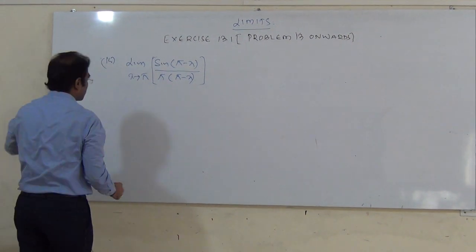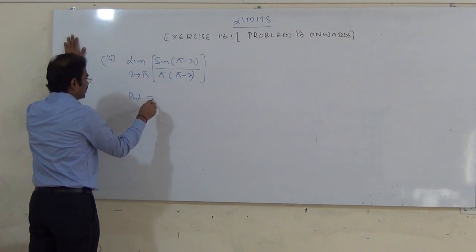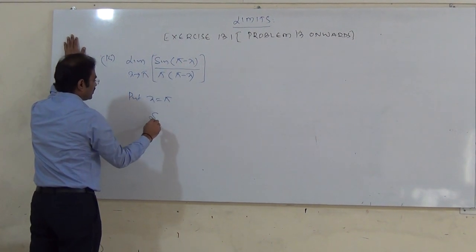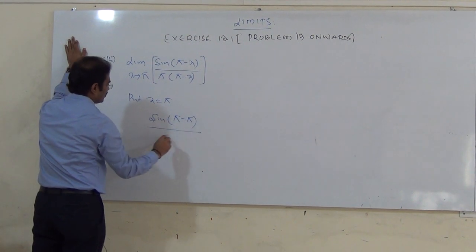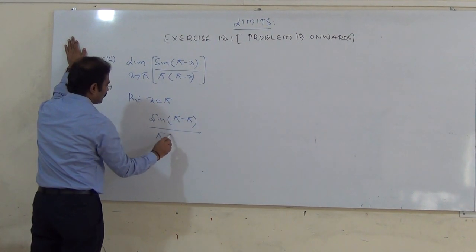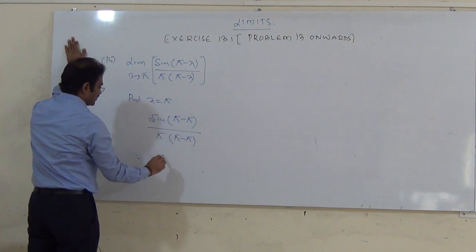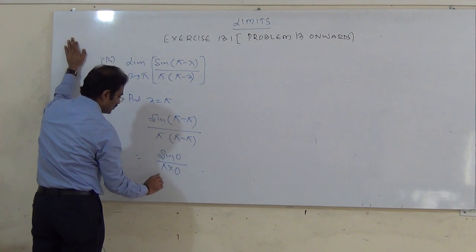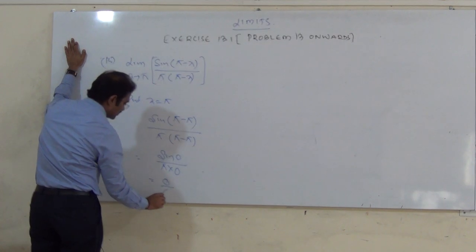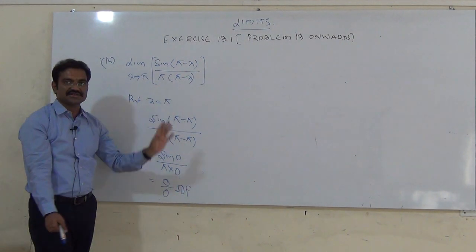Next, the 15th question: limit of sin(π − x) / [π(π − x)] as x tends to π. First put x = π: sin(π − π) / [π(π − π)] = sin(0) / (π × 0) = 0/0, which is IDF.